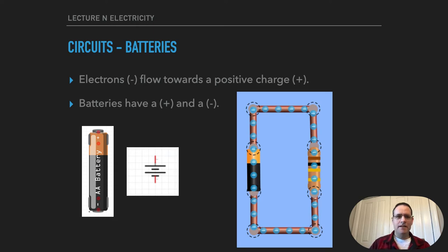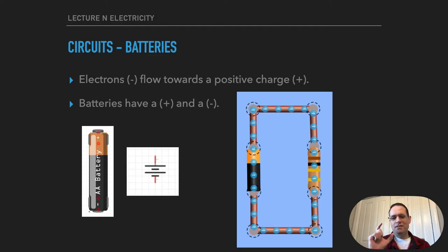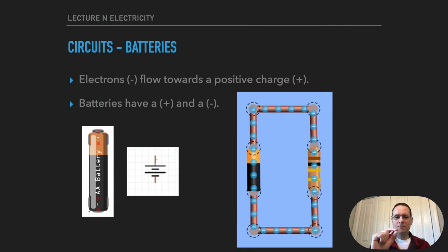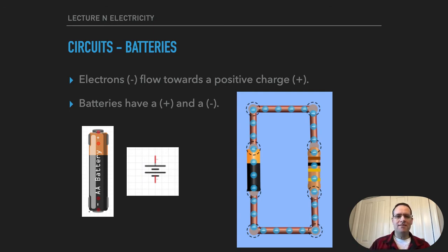The first thing we have are batteries. If you look at this battery, it kind of looks like a Duracell battery — there's a minus on the bottom and then there's a plus on the top where that little bump is. The important thing is to remember that electricity is the flow of electrons from the negative part of the battery to the positive part, and that flow only happens if you have a continuous circle of wire, or what we call a circuit.